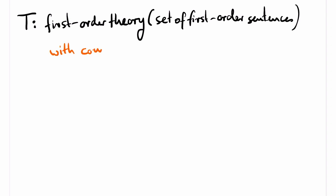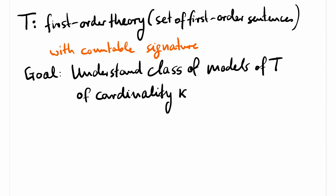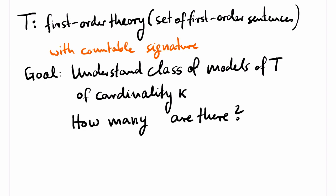For simplicity, I assume throughout the video that T has a countable signature. A concrete and fundamental question that one can ask about the class of all models of T is how many models of some fixed cardinality kappa are there? If we count models, we actually want to count isomorphism classes of models.